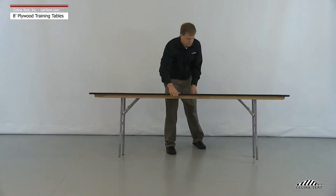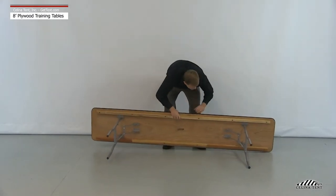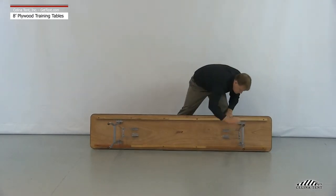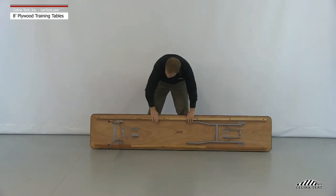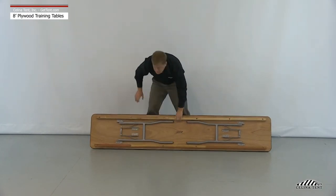For disassembly, set the table on its side and unlock the legs by bending the leg hinges until the dimple lock on the legs uncouples. Fold the legs flat against the underside of the table.